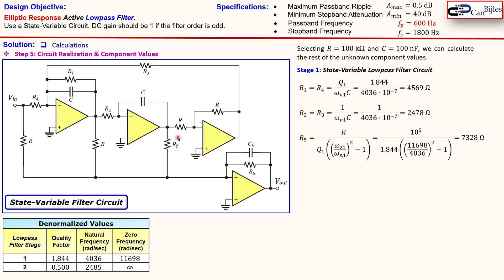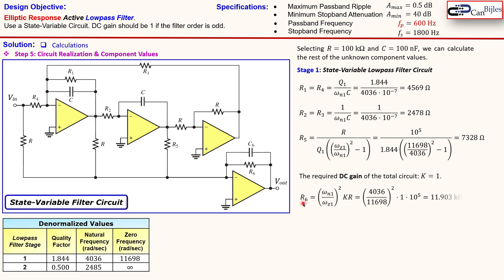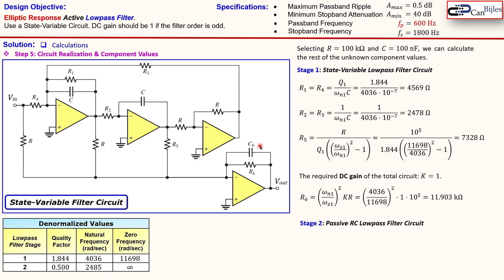The required DC gain is 1 (0 dB) since we have an odd-order filter, so K = 1. The resistor R6 is computed as the ratio involving the natural frequency, zero frequency squared, K, and R, giving approximately 11.9 kΩ. Finally, capacitor C6 for the second stage uses omega_n2 = 1/(R6·C6), and solving gives C6 ≈ 33.81 nF. We now have all component values for the final design.